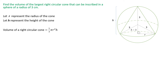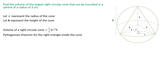The volume of a right circular cone is one-third times pi times r squared times h. We're going to use the Pythagorean theorem to write an expression for the right triangle inside of the cone.